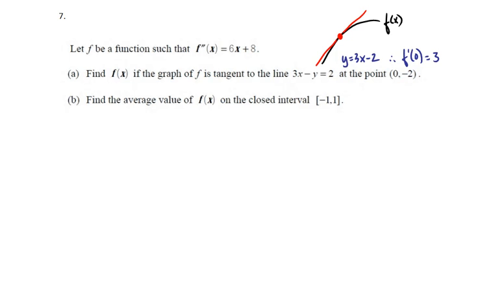The slope of the tangent line is 3, the derivative is 3, so f'(0) equals 3. We're going to need that piece of information. We want to find the first derivative from the second derivative by integration.